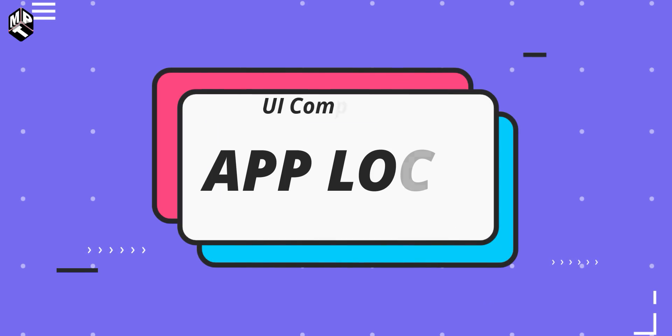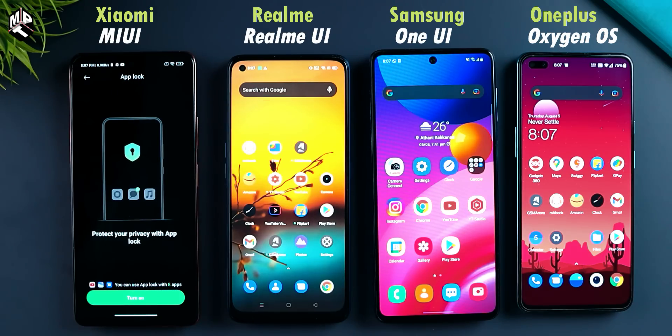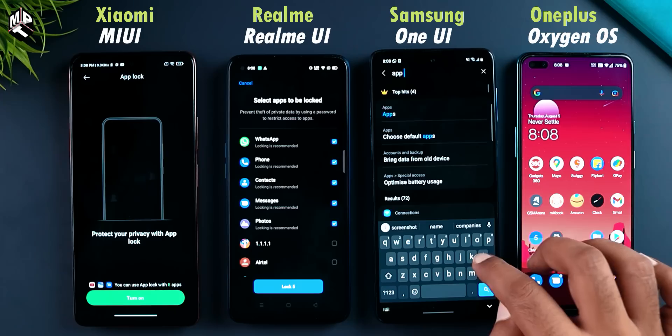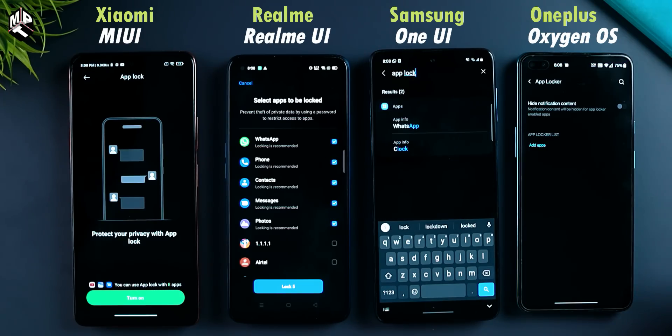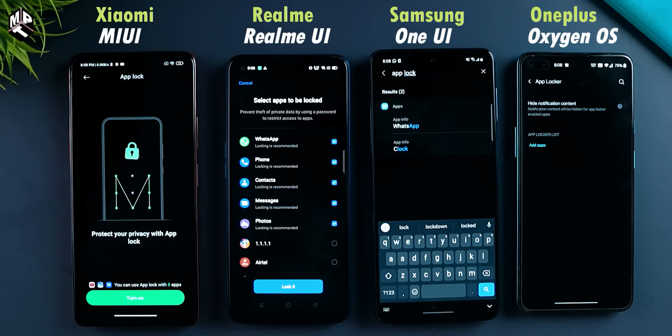The app lock feature is very easy — you can lock WhatsApp, Instagram, and Facebook using a pin, pattern, or fingerprint. This is an extra security and privacy measure. One UI does not have app lock by default, but it does have Knox security. MIUI, Realme UI, and OnePlus Oxygen OS have app lock by default.